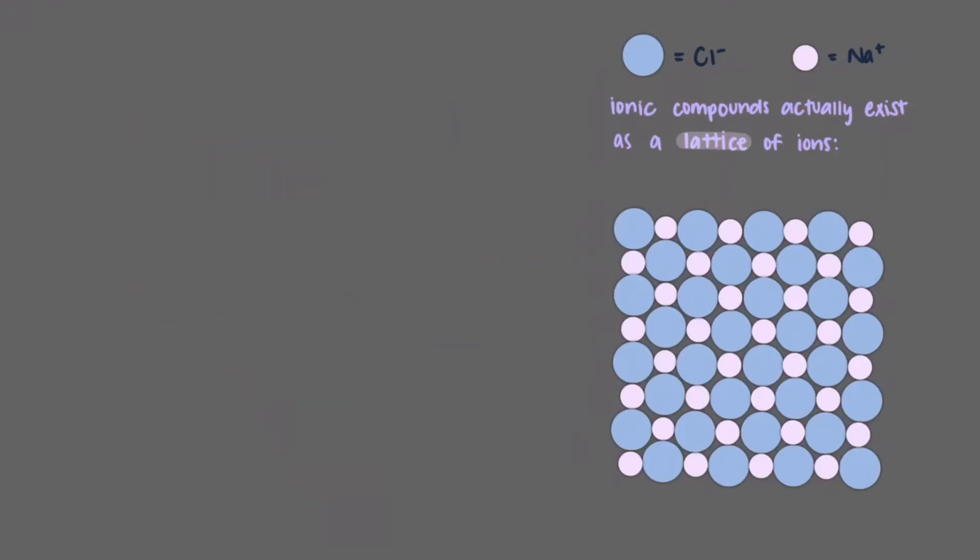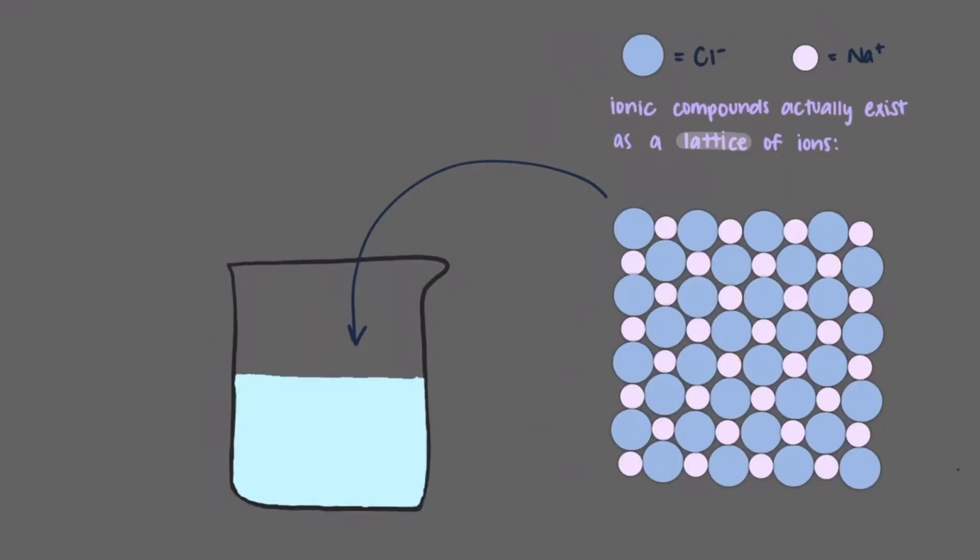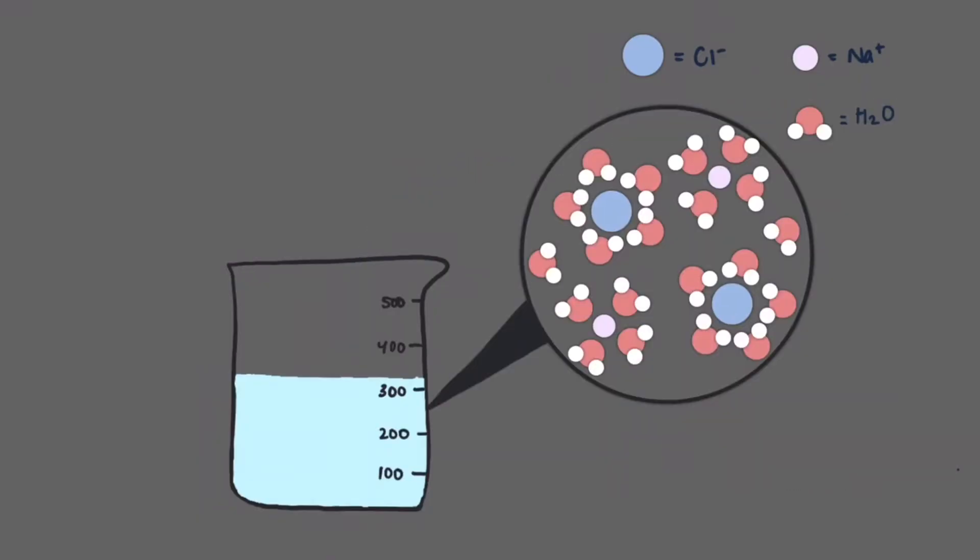When an ionic compound is placed in water, if soluble like solid sodium chloride, it will break up into individual ions each surrounded by many water molecules. In this case then, sodium chloride will break up into sodium ions and chloride ions, each surrounded by waters.